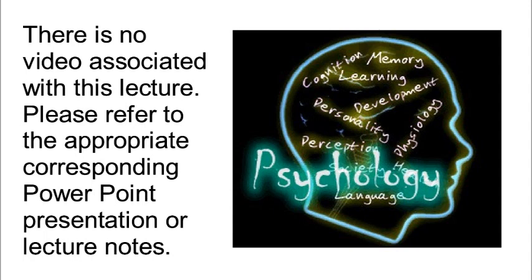The next is logical-mathematical intelligence. Someone high on this is very comfortable with numbers and computations, can solve brain teasers requiring logical thinking, finds logical flaws in things, uses symbols to manipulate information, and can make deductions from given details. This represents the ability to think logically, hierarchically, categorically, and sequentially.